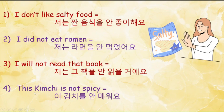Next is: This kimchi is not spicy. In Korean: 'ye kimchi ril an maugayo'. Now here you can notice that 'mepta' is an adjective which means 'to be spicy', and we have conjugated it in the present tense as 'mewayo'. So while turning this sentence into a negative form, we used 'an'. So these were some examples to understand how to use 'an' to create negative sentences in Korean.